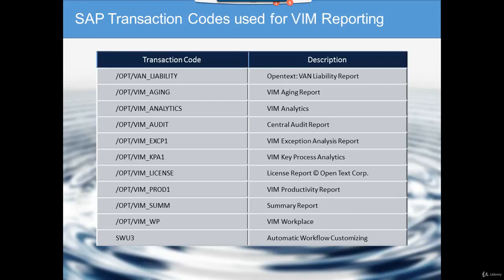The second one is the VIM Aging Report. The VIM Aging Report tracks all the invoices that have been aging in the system. Often there are trouble vendors which give us wrong information related to invoices — those old invoices that you cannot pay — so you can keep track of the aging of those invoices.